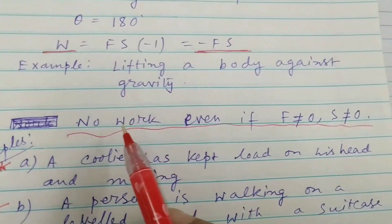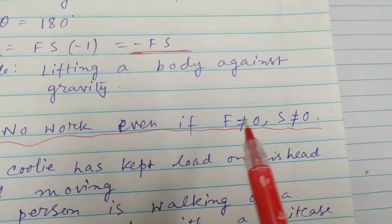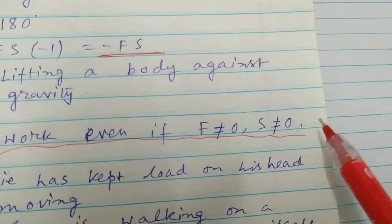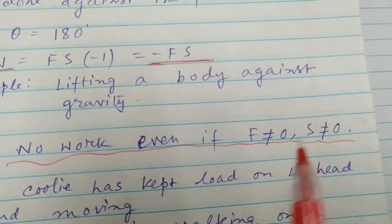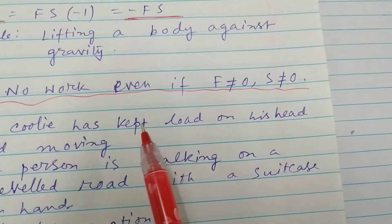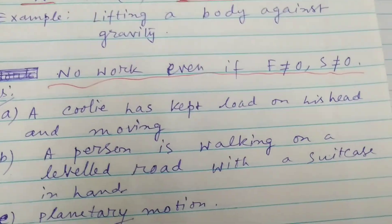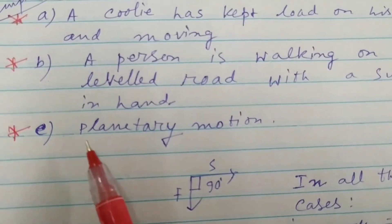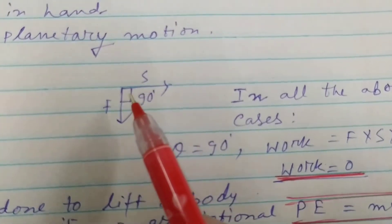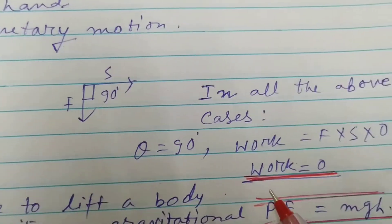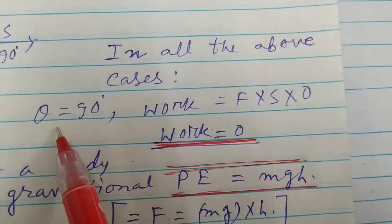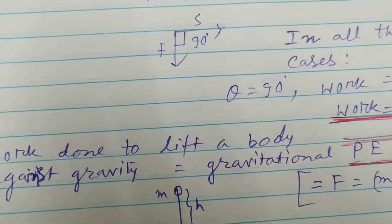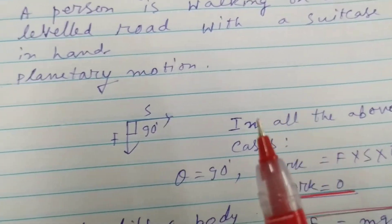Third case: no work is done even if F is not equal to zero and s is not equal to zero. Examples: a coolie has kept a load on his head and is moving; a person is walking on a level road with a suitcase in his hand; and planetary motion. In all these cases, F and s are at right angles, so theta is 90 degrees. Work done is Fs cos 90°, and cos 90° is zero, therefore work done is zero.